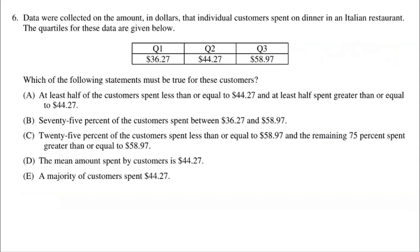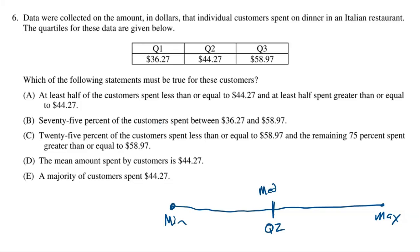This question gives Q1, Q2, and Q3 for amounts customers spent at an Italian restaurant, and asks which statement must be true. The second quartile, also known as the median, has 50% of data below it and 50% above it. Q1 is the middle of the bottom half, meaning 25% below and 75% above. Q3 is the middle of the upper half, meaning 75% below and 25% above.